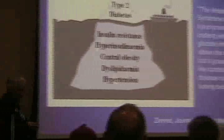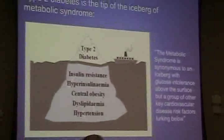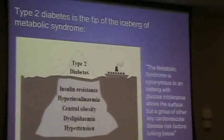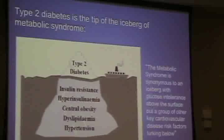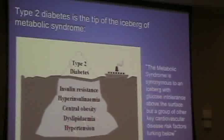Paul Zimmet is a leading diabetologist based in Melbourne, Australia. He wrote a paper about this around 2000 in which he said type 2 diabetes is the tip of the iceberg. The iceberg is metabolic syndrome — a combination of insulin resistance, high insulin, central obesity, fat around the middle, lipid problems, and high blood pressure. I add a bigger iceberg under that one, and that's the obesity epidemic. Think of this as a continuum: obesity, pre-diabetes, diabetes, and heart disease.